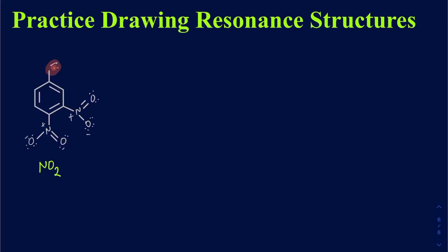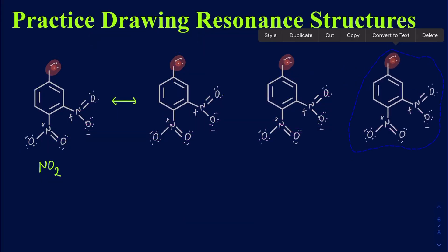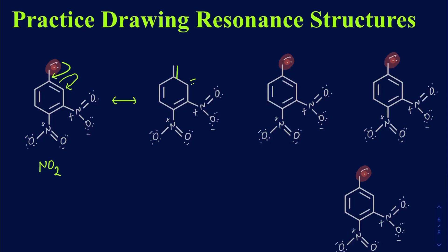This lone pair is going to be moving into the ring. Before I draw the arrows, I'm going to make a few copies of this structure so I don't have to redraw it every time. In the first case, I would have this lone pair going in there to create a double bond, and in doing so the pi bond is going to break to create electron density on this particular carbon. I'll erase that part and draw a new double bond right there, and in addition there is going to be a lone pair right here.